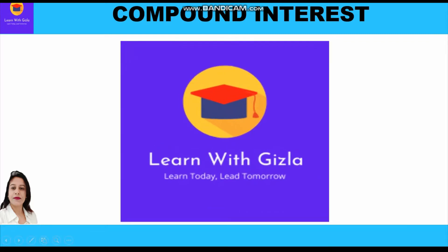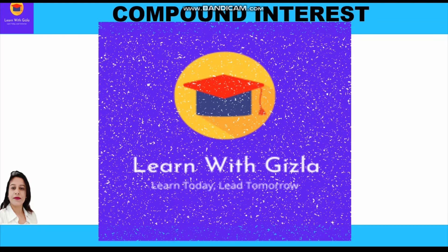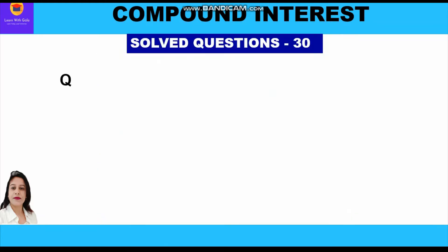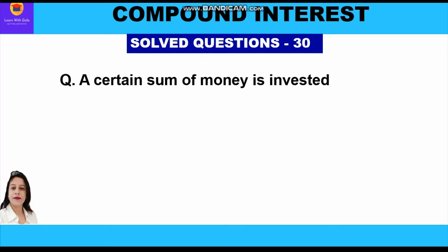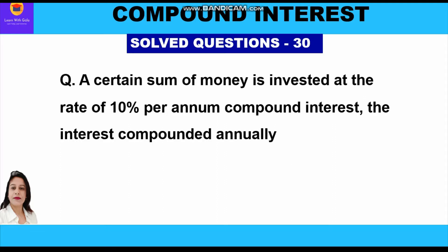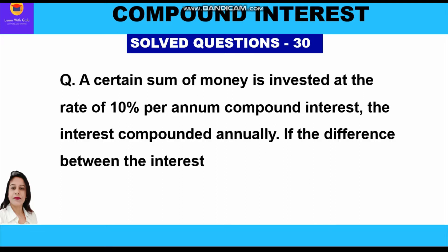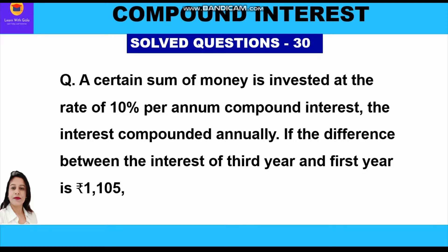Hello dear students, hope you are doing good. Welcome to YouTube channel Learn with Gizla. Let's take up an important question of compound interest. A certain sum of money is invested at the rate of 10 percent per annum compound interest, compounded annually. The difference between the interest of the third year and the first year is rupees 1105.